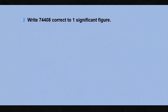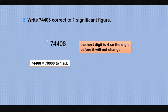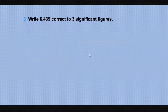Next question: write 74,408 correct to one significant figure. For one significant figure, look at the second digit, which is 4. Since 4 is less than five, the digit before it does not change. So the answer is 70,000. The significant figure here is only 7; the trailing zeros are not significant. Again, it is a five-digit number so the answer must also be in five digits.